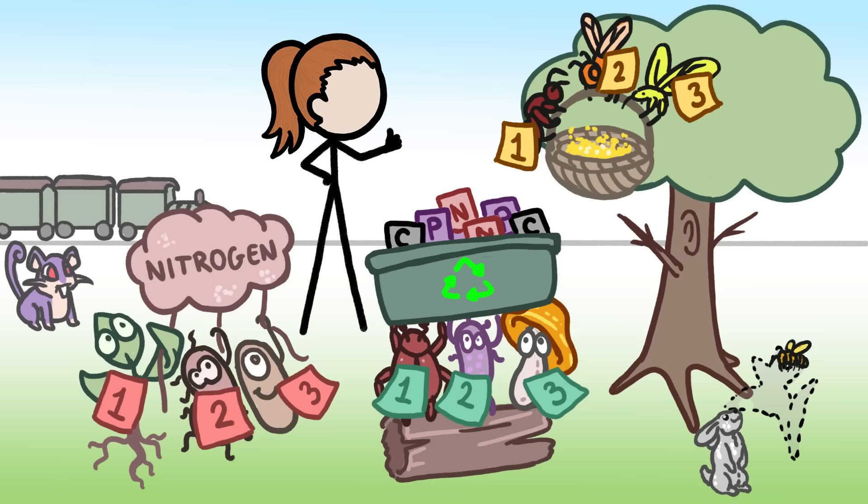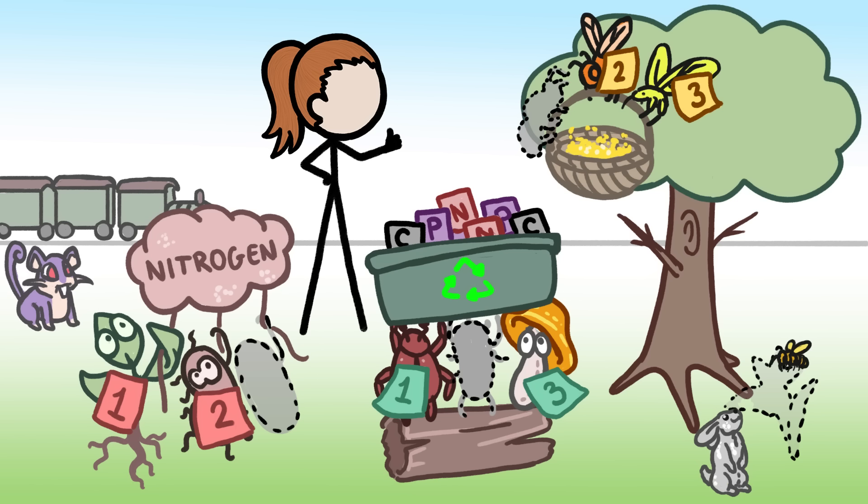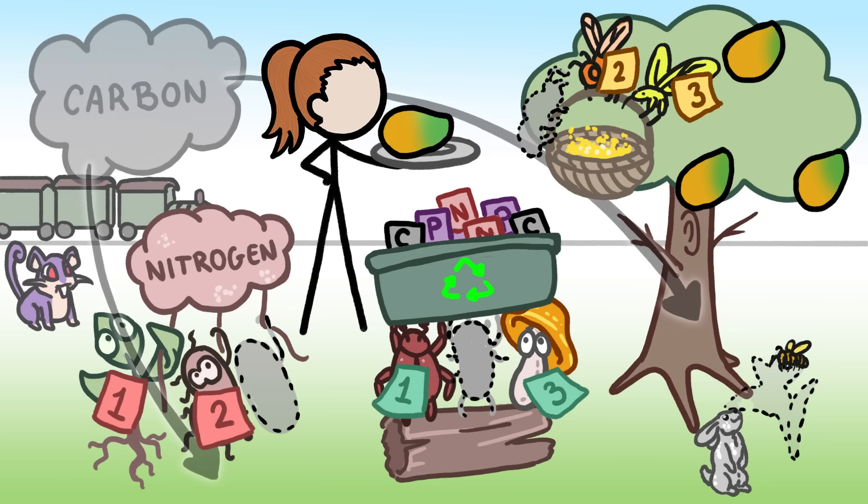That's great news for us humans, since it means that even as species are lost, many ecosystems can, more or less, keep doing stuff we rely on them for. Like producing food and storing carbon.